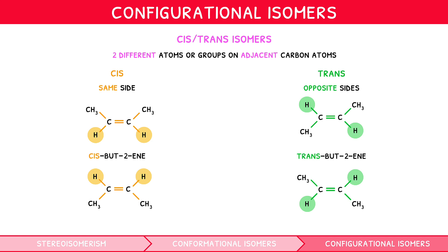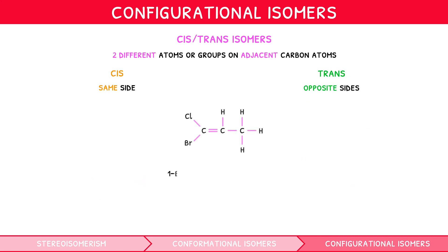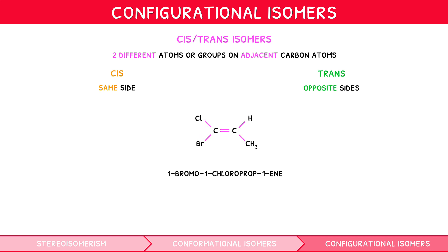However, cis-trans isomers are not limited to hydrocarbon groups. Let's consider 1-bromo-1-chloro-prop-1-ene, which has the following displayed formula. If we redraw this to focus on the double bond, we once again have two different groups on two adjacent carbons: bromine and chlorine on the left, and hydrogen and CH3 on the right. However, when the two groups on the two carbon atoms are not the same, it becomes difficult to identify on which side things lie.